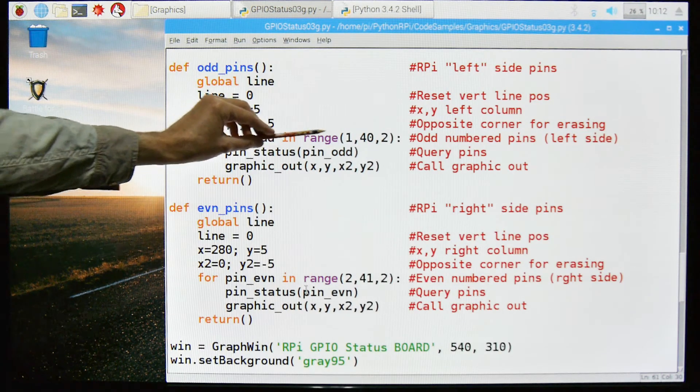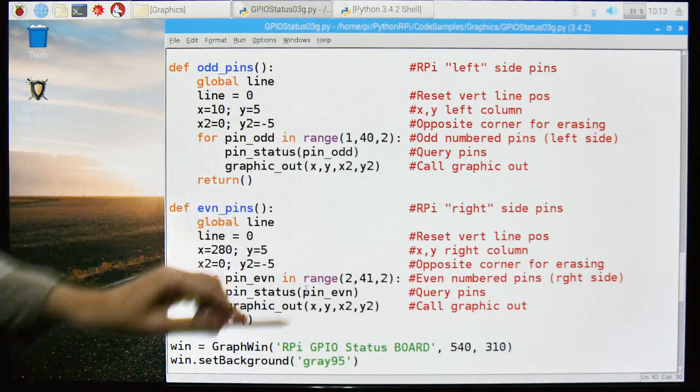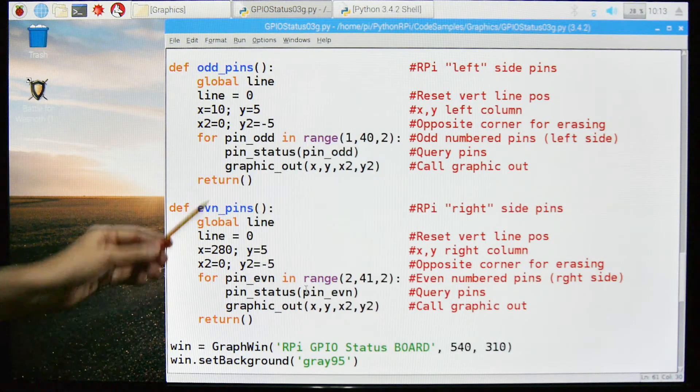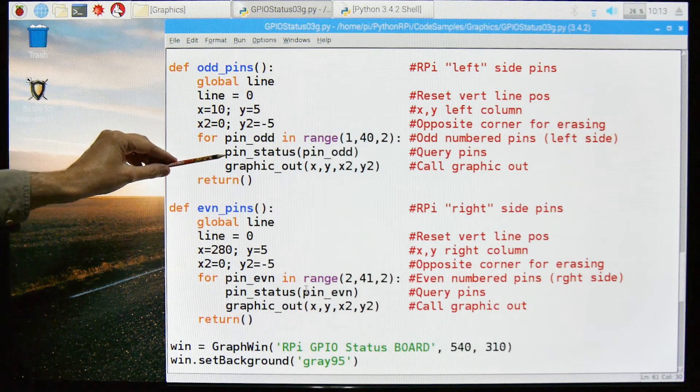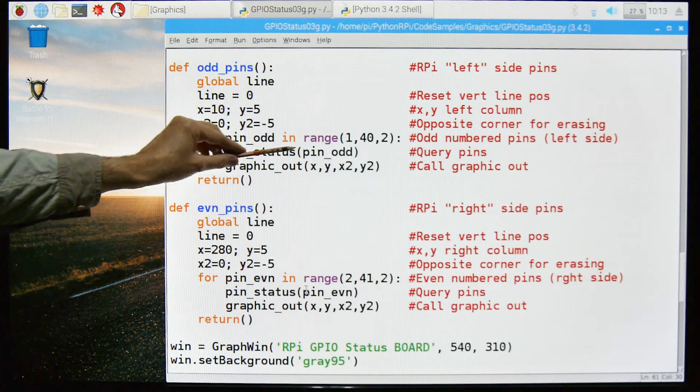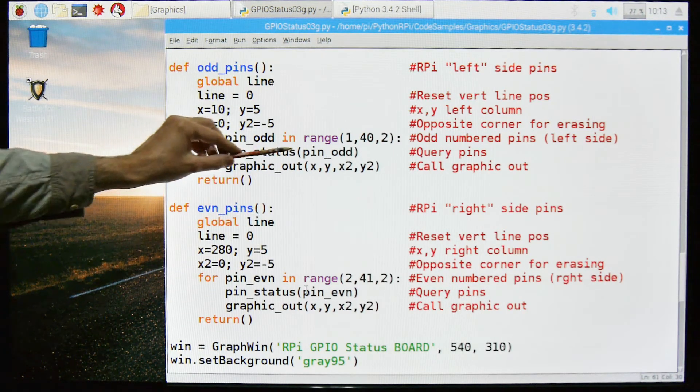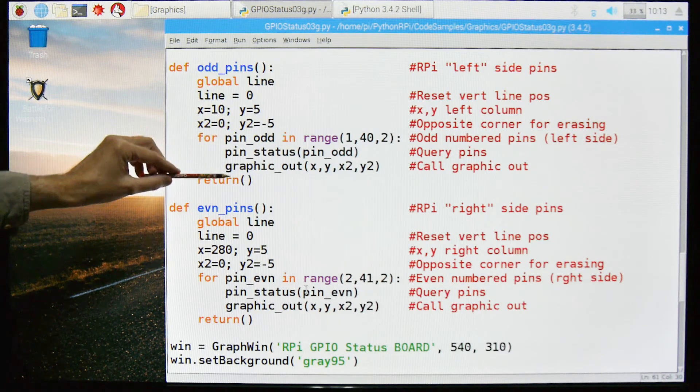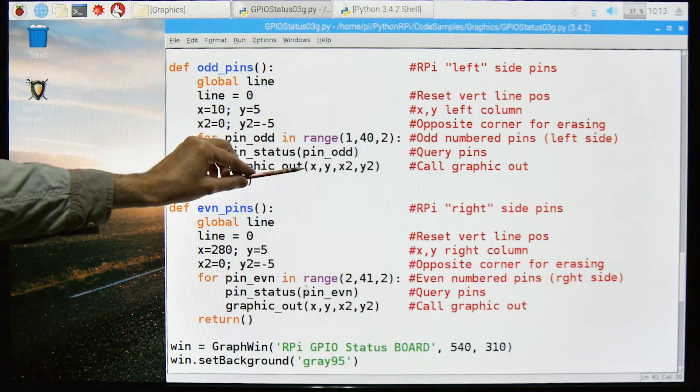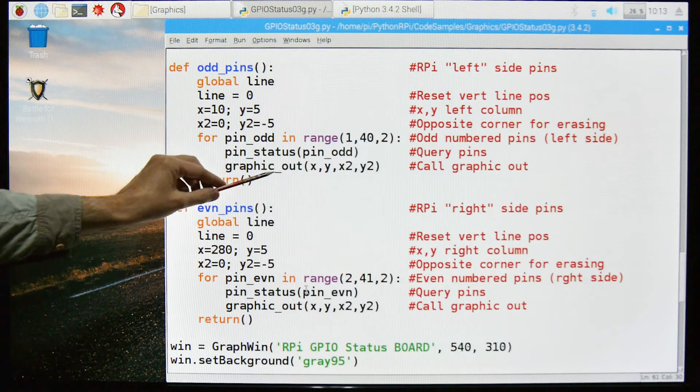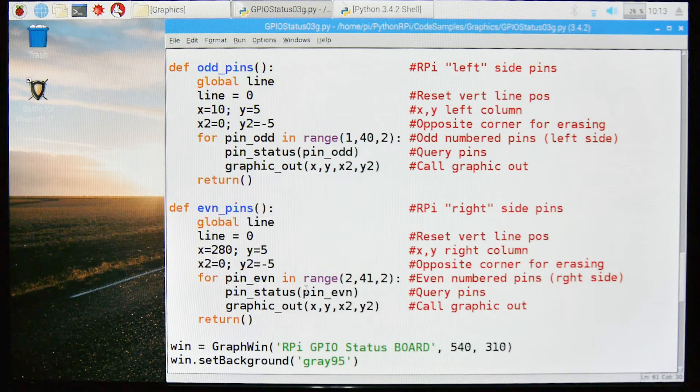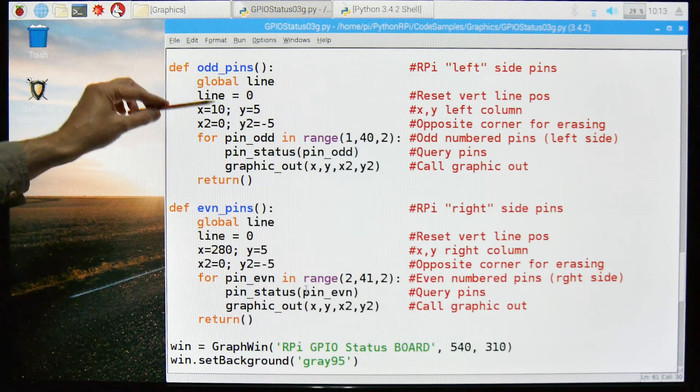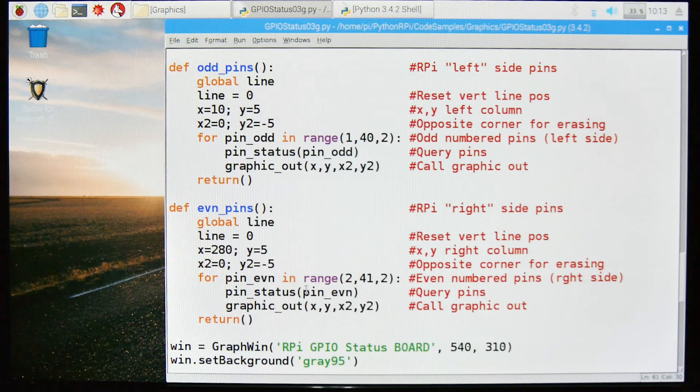So what we're going to do is we're going to say for pin, the odd pins in the range between 1 and 40, incremented by 2. So these are all the odd pins on what I call the left side. The pin status, we're going to execute that pin status function using this variable, the pin odd, and then the graphic out is going to be the routine that we just looked at, and we're going to pass it that X, Y, X2, Y2, and that's it. So we'll run through that for all of the odd pins.